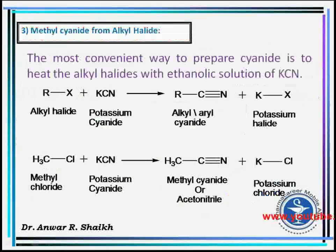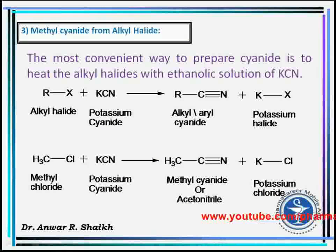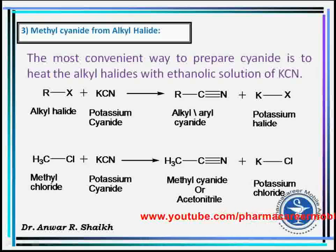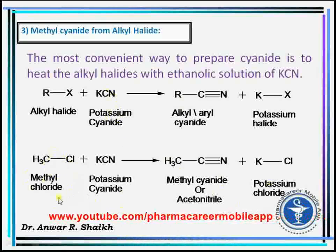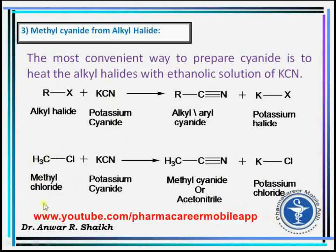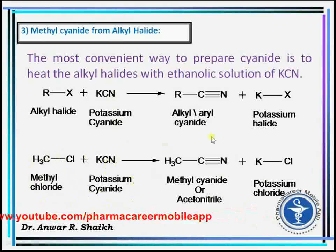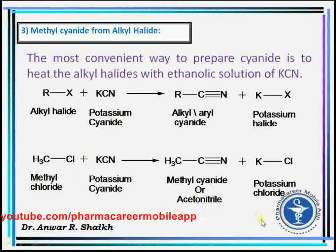The third method of preparation of cyanide is using alkyl halide. It is the most convenient way to prepare cyanide — heating alkyl halide with potassium cyanide. For example, to prepare methyl cyanide, the corresponding alkyl halide methyl chloride is reacted with potassium cyanide to form methyl cyanide.